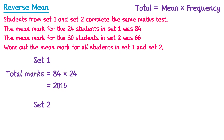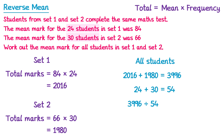Now we'll do the same for set 2. There are 30 students and the mean is 66, so we multiply 66 by 30, which gives a total of 1980 marks. The overall total marks is 2016 plus 1980, giving 3996 marks. We then divide by the total number of students: 24 plus 30 is 54 students. So the mean is 3996 divided by 54, which gives you 74 marks.